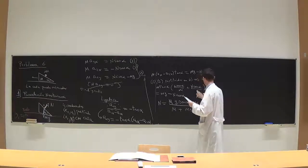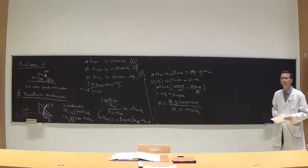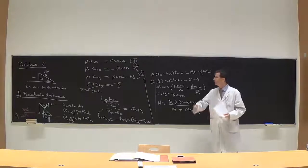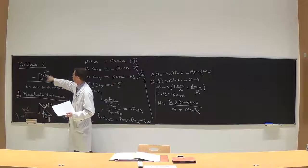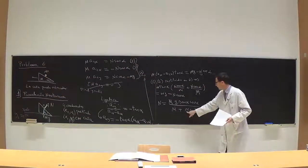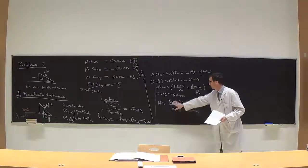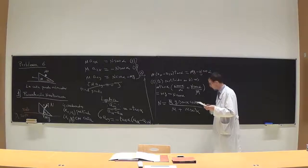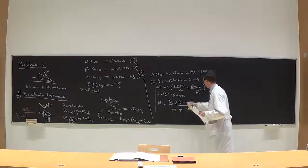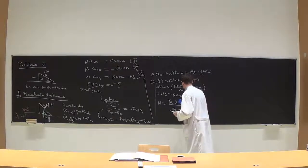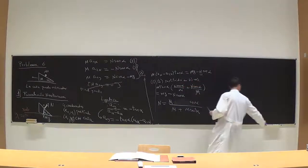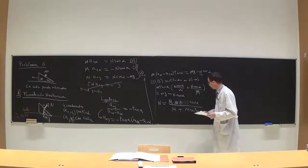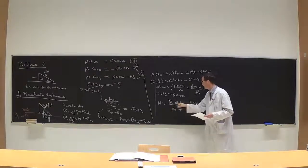Comprobamos el límite: si m mayúscula es mucho mayor que m minúscula, la cuña apenas se mueve y es el problema del plano inclinado habitual. En ese límite, N tiende a m·g·cos(alfa), que es el resultado esperado. Volvemos atrás y despejamos a₁x y a₂x. A₁x es M·g·sin(alfa)·cos(alfa) dividido por (M + m·sin²(alfa)). Por acción y reacción, a₂x lleva signo contrario al de a₁x y el cociente de aceleraciones es inverso al cociente de masas: el objeto más pesado se acelera menos.